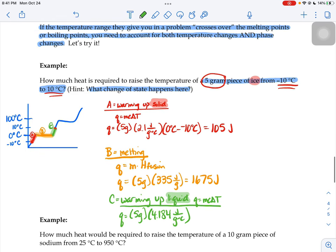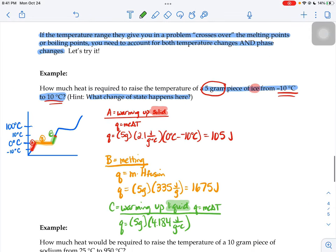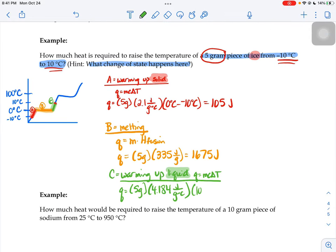Now I need the delta T. For the delta T, I'm not going to say negative 10 to positive 10, because it doesn't stay a liquid during that entire temperature range. I'm looking at just section C of the graph, just this green part. The temperature during part C starts at zero and climbs up to 10 degrees. So my final temperature is 10, my initial is zero. That part, 209.2 joules.